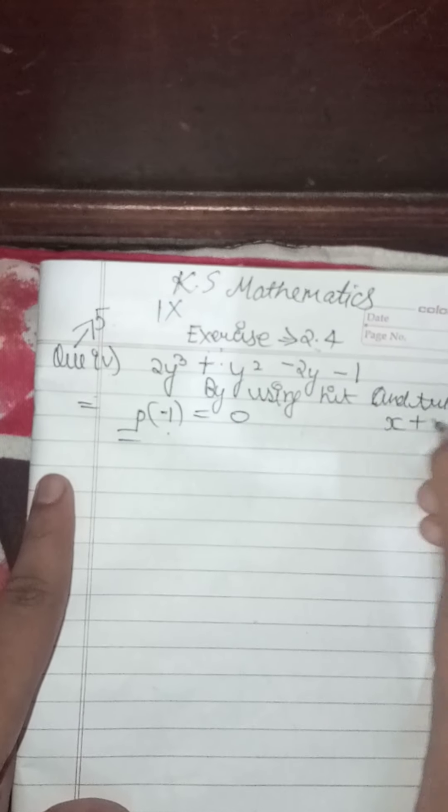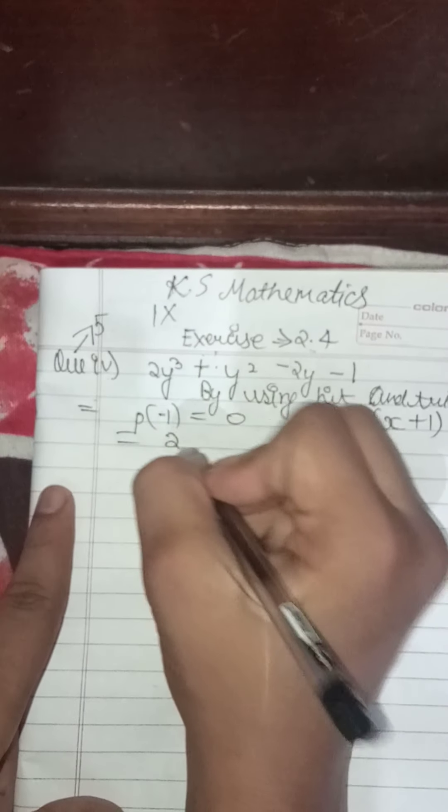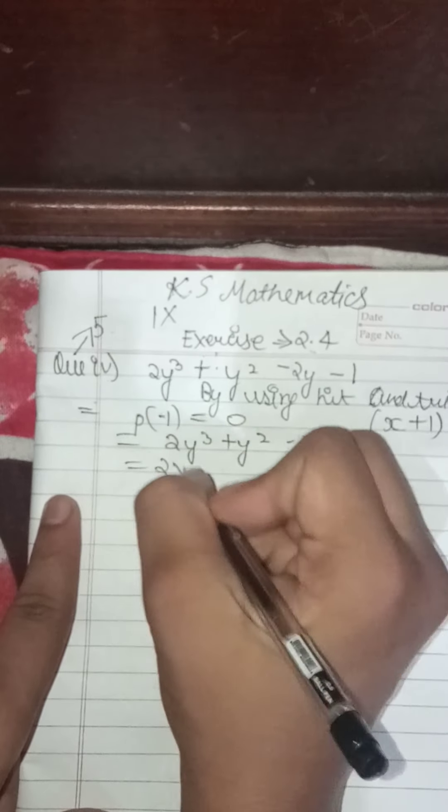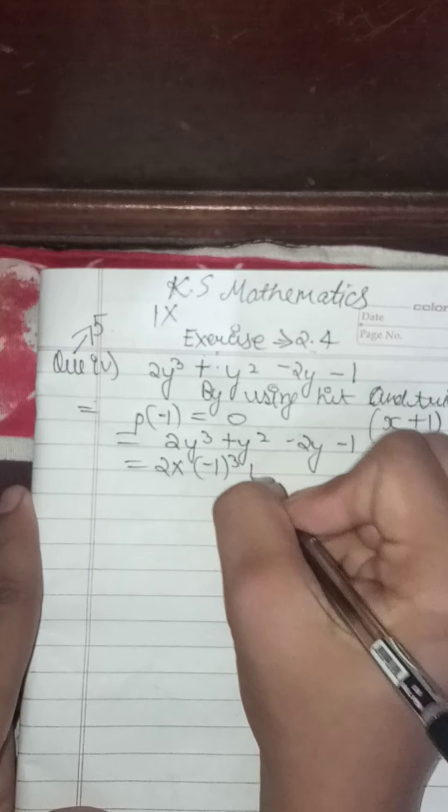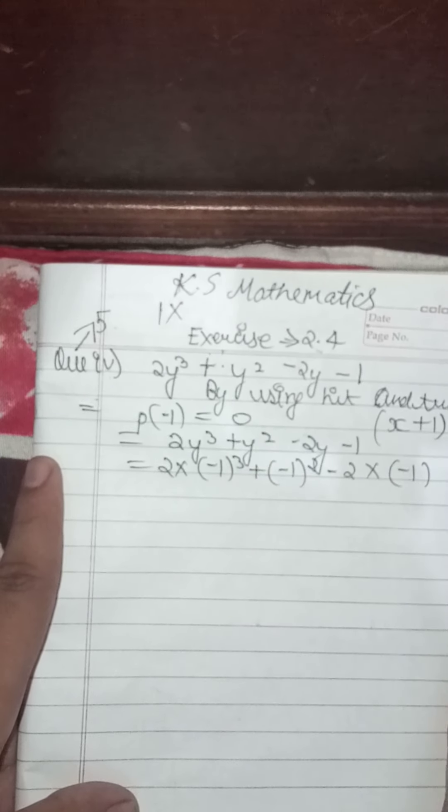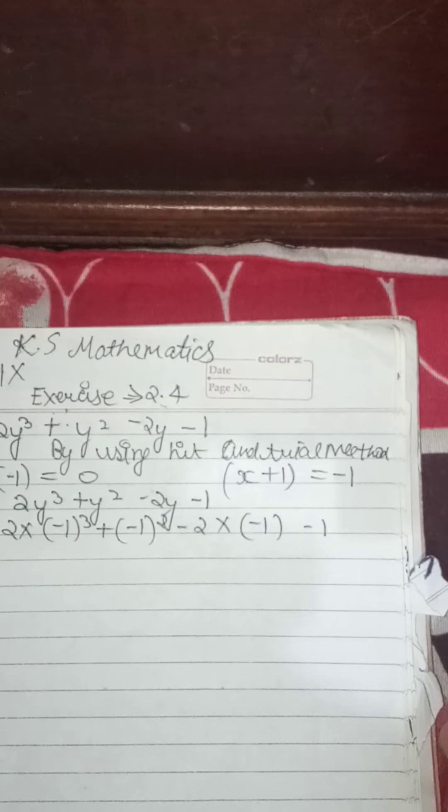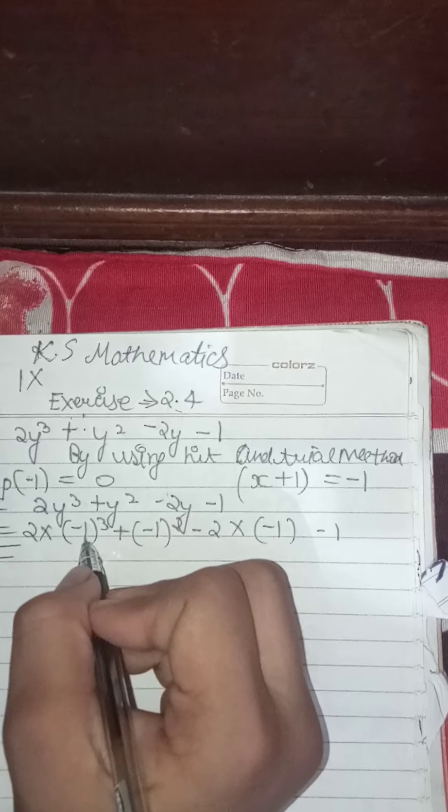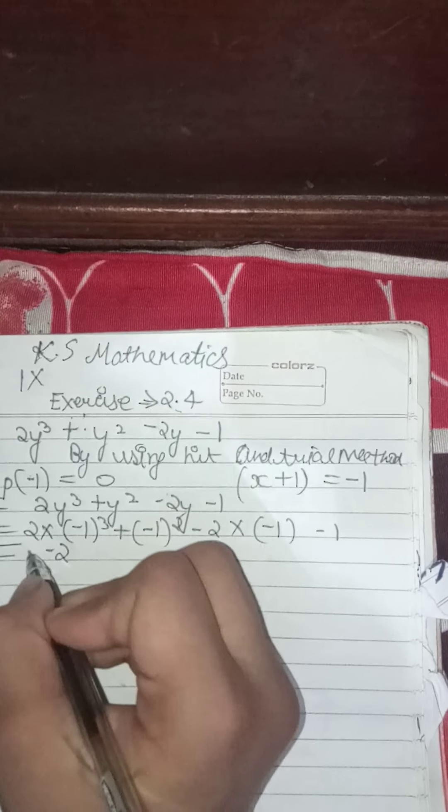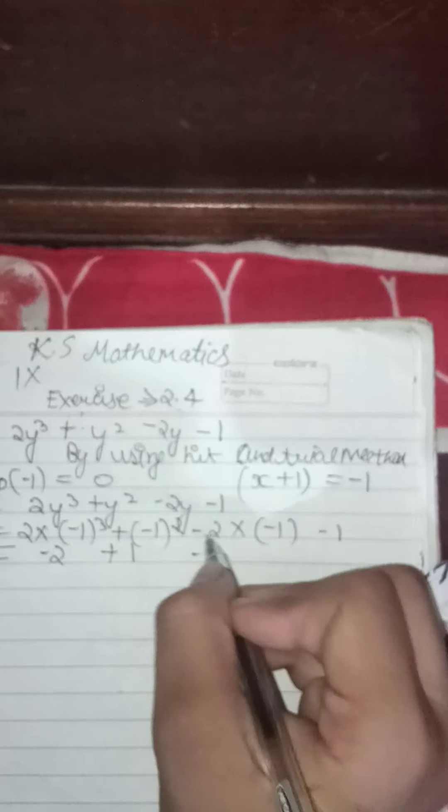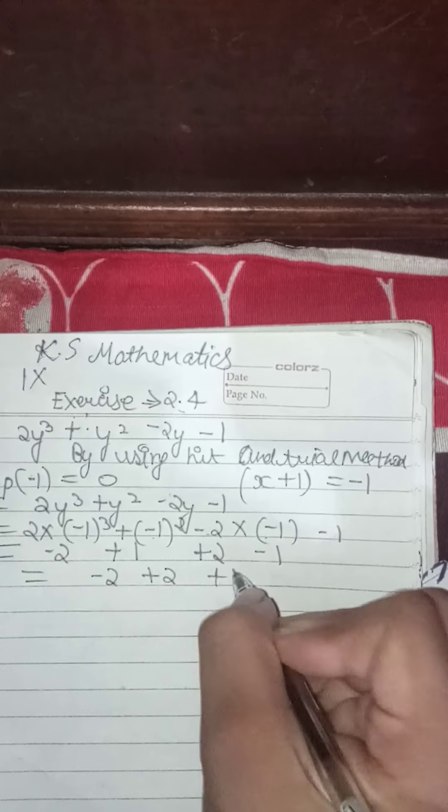Y plus 1 equals minus 1. So 2y cube, if we put minus 1, then it will be 2 into minus 1 cube plus minus 1 square minus 2 into minus 1 minus 1. Then we will solve this: minus 1 cube equals minus 1, minus 2, minus 1 minus 1 plus 1, minus 2, minus becomes plus, plus 2 minus 1.